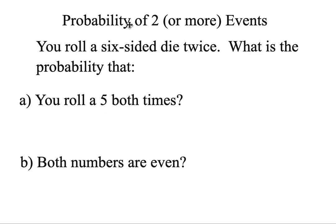The next style of question you might see is when you have multiple events. All the ones we did so far, there was only one thing happening at a time. Now, you roll a six-sided die twice. What is the probability that you roll a five both times? What is the probability you roll a five? That's just one out of six. You pick up the die. You roll it again. It's still one out of six. You might think that it changes, but it really doesn't. It's still one out of six the second time. The question is, what do we do with both of these now?